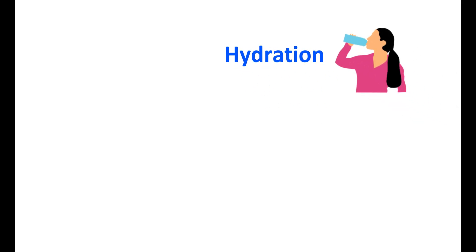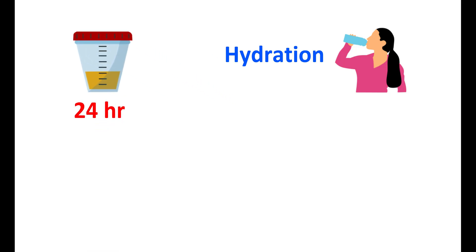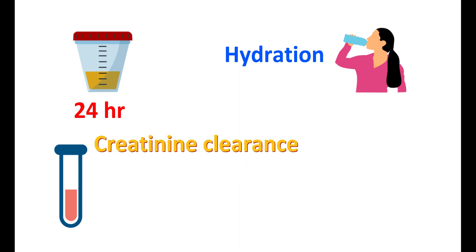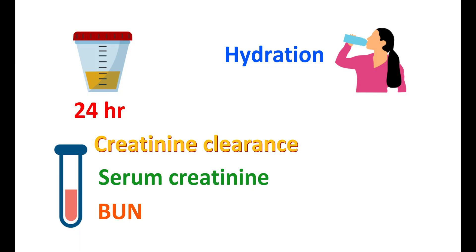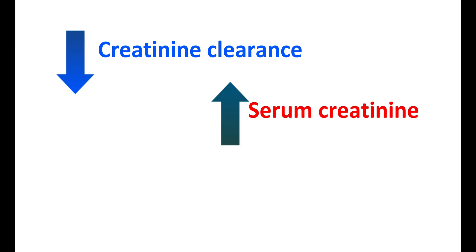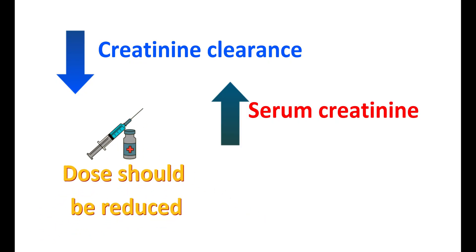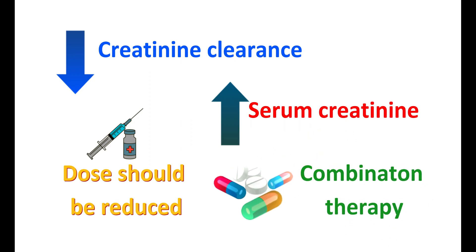To minimize nephrotoxicity, adequate hydration should be maintained before treatment and urine output should be normal 24 hours prior to initiation. Blood parameters such as creatinine clearance, serum creatinine, blood urea nitrogen, and serum electrolytes should be checked before starting therapy and monitored during therapy. Magnesium levels may be reduced and can be maintained with magnesium supplements. If significant reduction in creatinine clearance or elevation of serum creatinine is observed, the dose should be reduced and combination therapy is suggested.